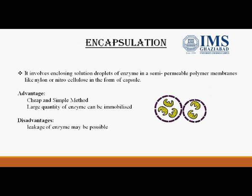Encapsulation involves enclosing a solution droplet of enzyme in a semi-permeable membrane which allows only substrate molecules to cross, not the enzyme. The substrate enters, interacts with the enzyme, and the product is formed. Semi-permeable membranes used are nylon or nitrocellulose. Advantages include it being a cheaper and simpler method where large quantities of enzyme can be immobilized. The disadvantage is that it can lead to leakage of the enzyme.